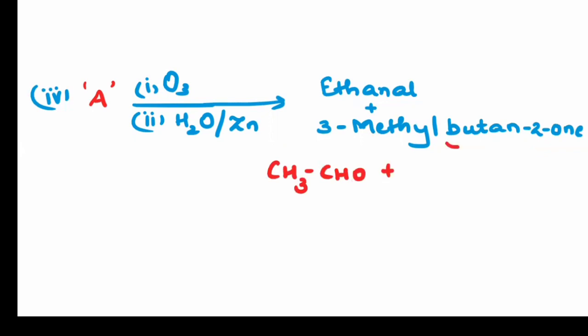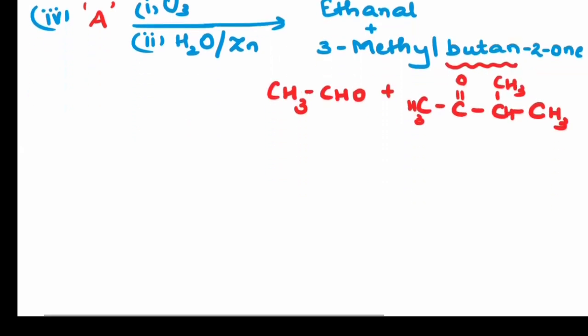First write down butane group 1, 2, 3 and then 4. On the second carbon we will be having double bond. On the third carbon we have CH3. So this is the structure. As I said you need to rearrange the structure.